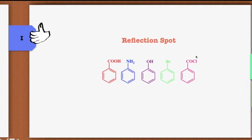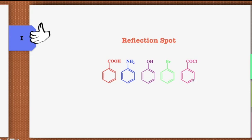At the reflection spot, consider five compounds: benzoic acid, aniline, phenol, bromobenzene, and benzoyl chloride. For benzoic acid, the incoming electrophile will attack at the meta position. For aniline, you get ortho and para isomers. For phenol, you also get ortho and para isomers. For bromobenzene, even though it is weakly deactivating, you get ortho and para isomers due to formation of a stable bromonium ion. For benzoyl chloride, you get the meta-substituted product.